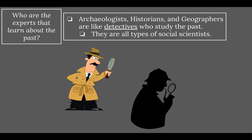Who are the experts that learn about the past — experts that ask questions, study evidence for clues, and form hypotheses, which are educated guesses about the past? In this section, we're looking at three specific jobs: archaeologists, historians, and geographers, who are like detectives that study the past. These are all types of social scientists. Think of them as detectives — it's their job to figure out what people were like in the past, using the clues and resources available to them.